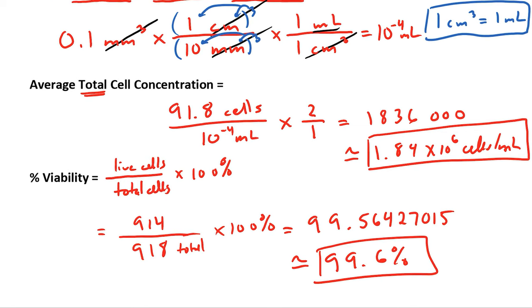So using this calculation, we can calculate total number of cells. If we use percent viability and apply that to our total cell concentration, we can determine the live concentration of cells and the dead concentration of cells.